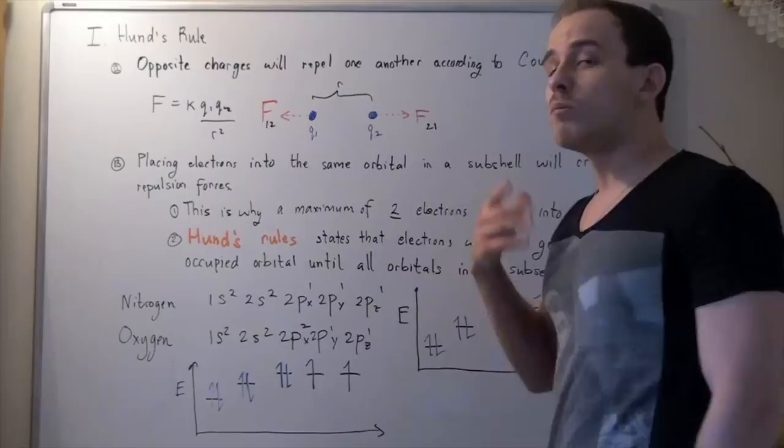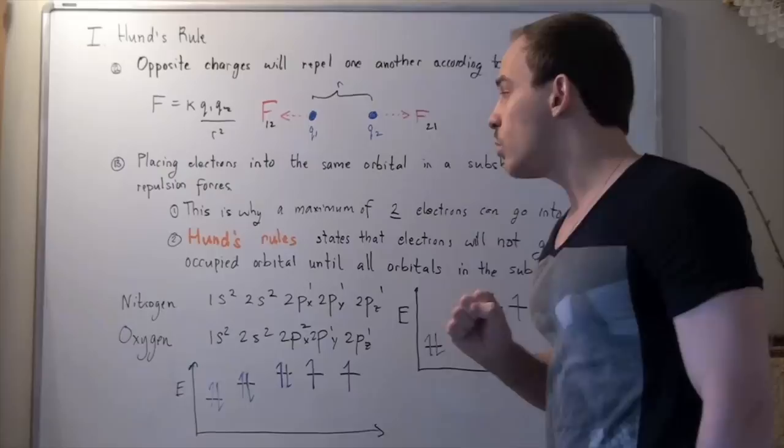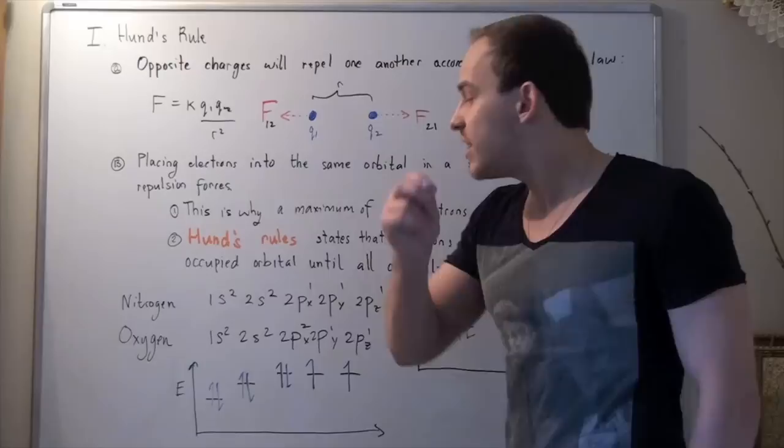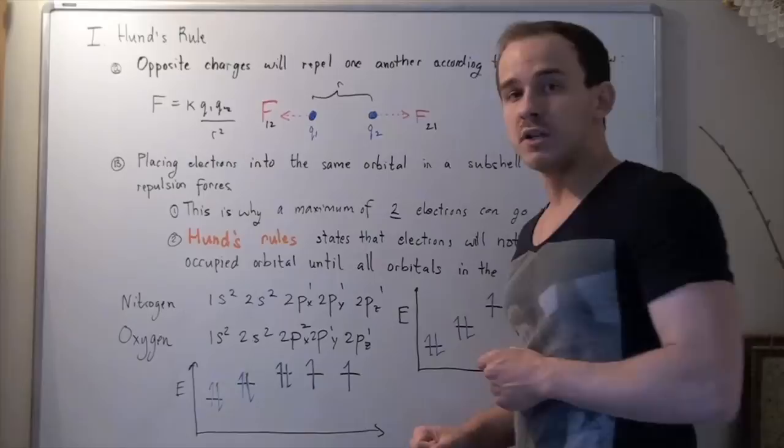Now, let's look at our p orbitals. Remember, there are three p orbitals. And what Hund's rule tells us is that before we add two electrons into any orbital, first all the orbitals must be filled with at least one electron.